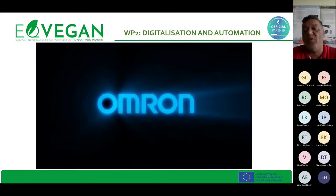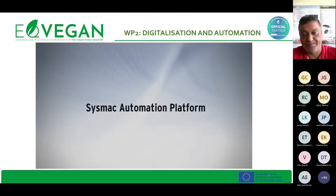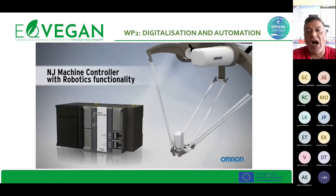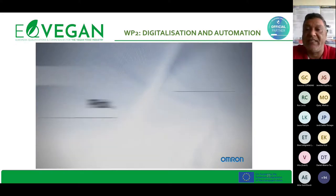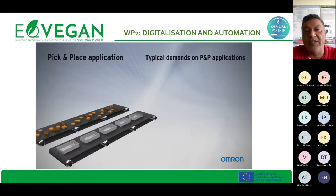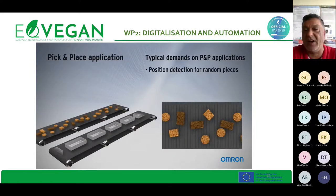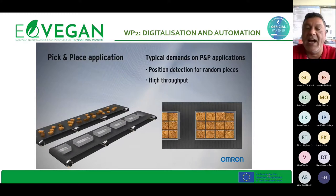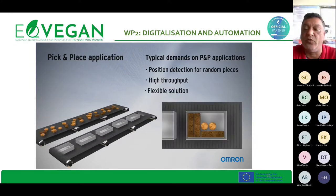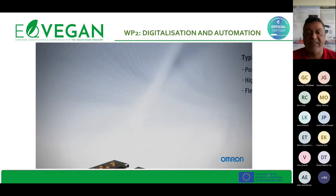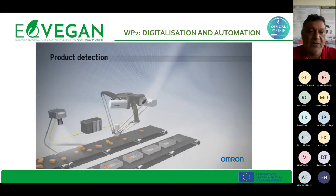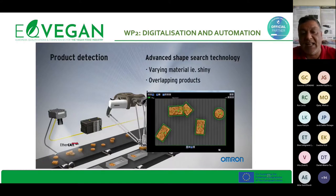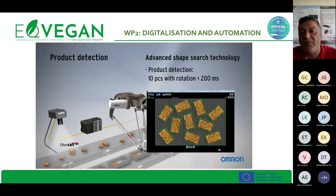Let me show some videos that demonstrate what automation is. For instance, Omron is one of the suppliers of PLCs. We can also see how PLCs and automation are used for pick-and-place applications in a food environment, and we have vision systems that can provide additional capability.